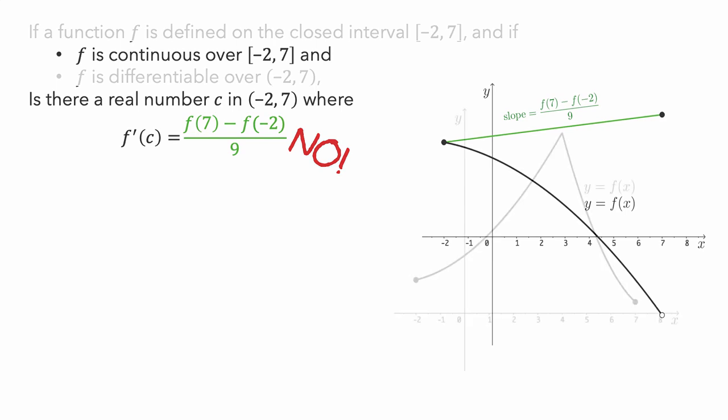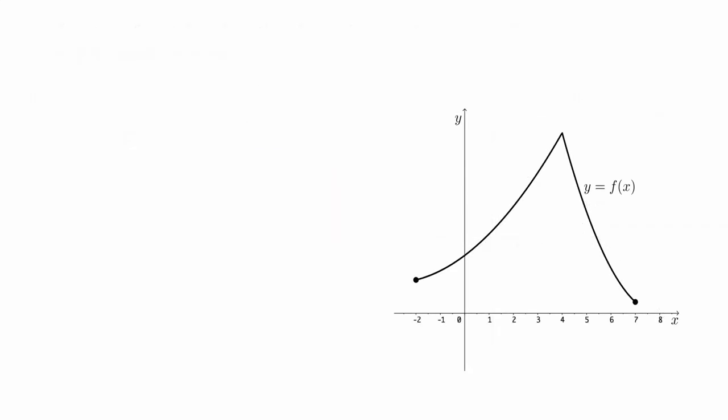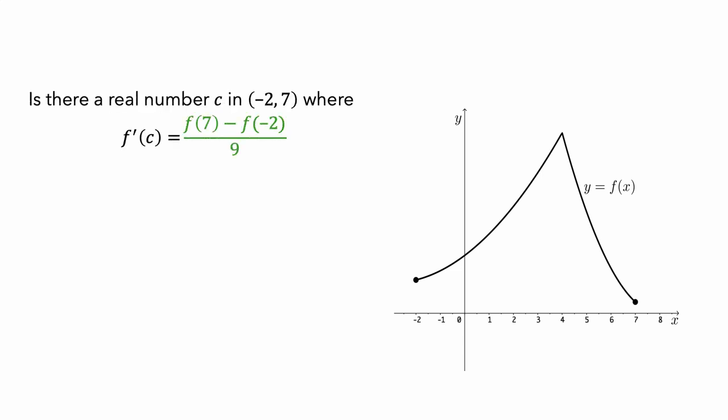Let's look at one more example. Here is a graph of another function. Like the previous function, it is defined on the interval from negative 2 to 7. So we can ask: is there a real number c in the interval from negative 2 to 7 where f prime of c is equal to this difference quotient? Pause the video and see if you can find such a value for c. To visualize this, we'll draw a secant line between the endpoints of the graph of the function on this interval. The slope of this secant line equals the average rate of change of f, computed using the difference quotient.